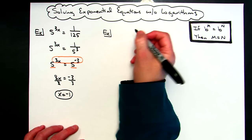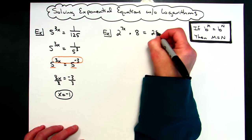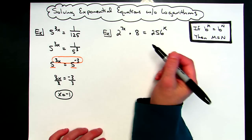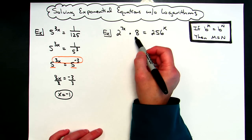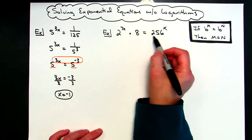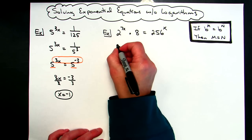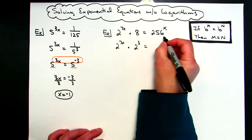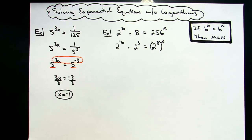Second example: let's take a look at 2 raised to the 7x times 8 equals 256 raised to the x. A little more complicated — we've got two exponents with an x in them. I've already got a base of 2, and I can see that 2 to the third power is 8, so I can replace that number. And 256 is 2 to the 8th. So we make those changes: 2 to the 7x stays, 8 becomes 2 to the third, and 256 becomes 2 to the 8th raised to the x.